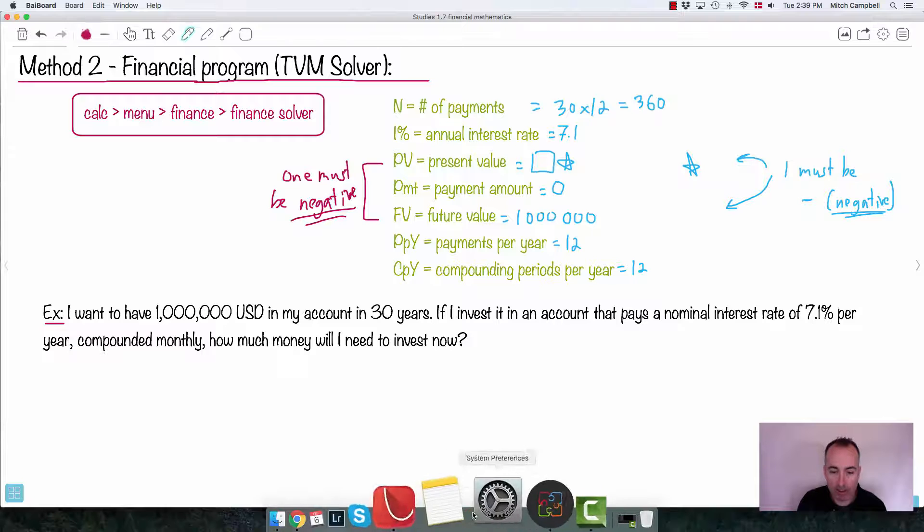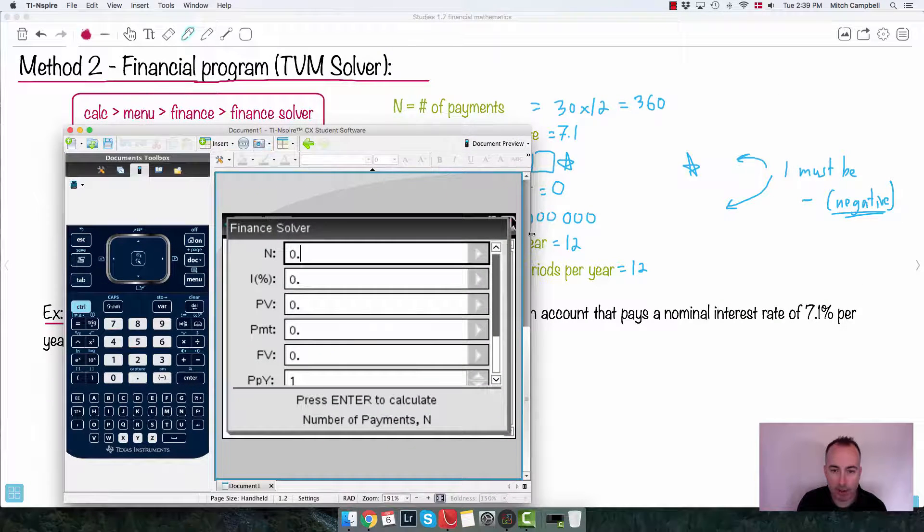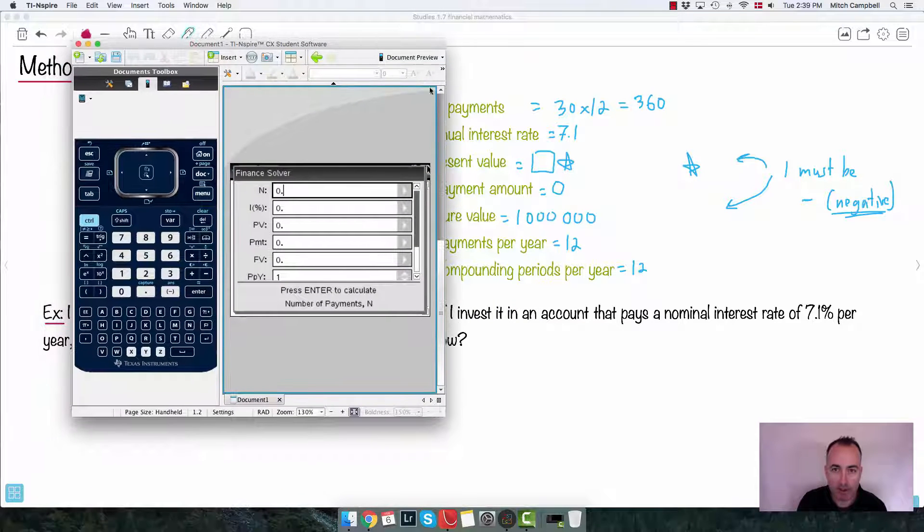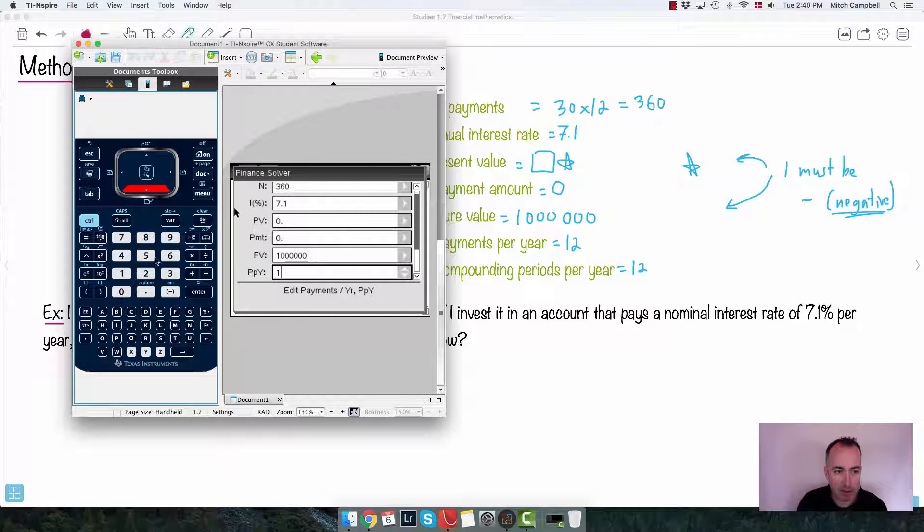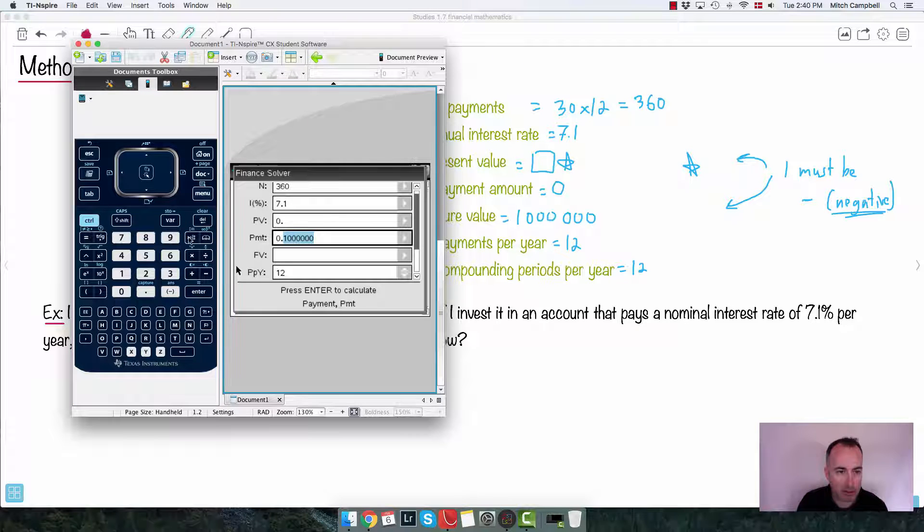And that's about it. So what you do with this, you put it into your calculator. So in this case right here, let me just put them all in here. I'm going to put in all this stuff. So my N is going to be 360. I scroll down. Interest rate is 7.1. It's really important. I'm just going to skip the PV for now. My payment amount is going to be zero.